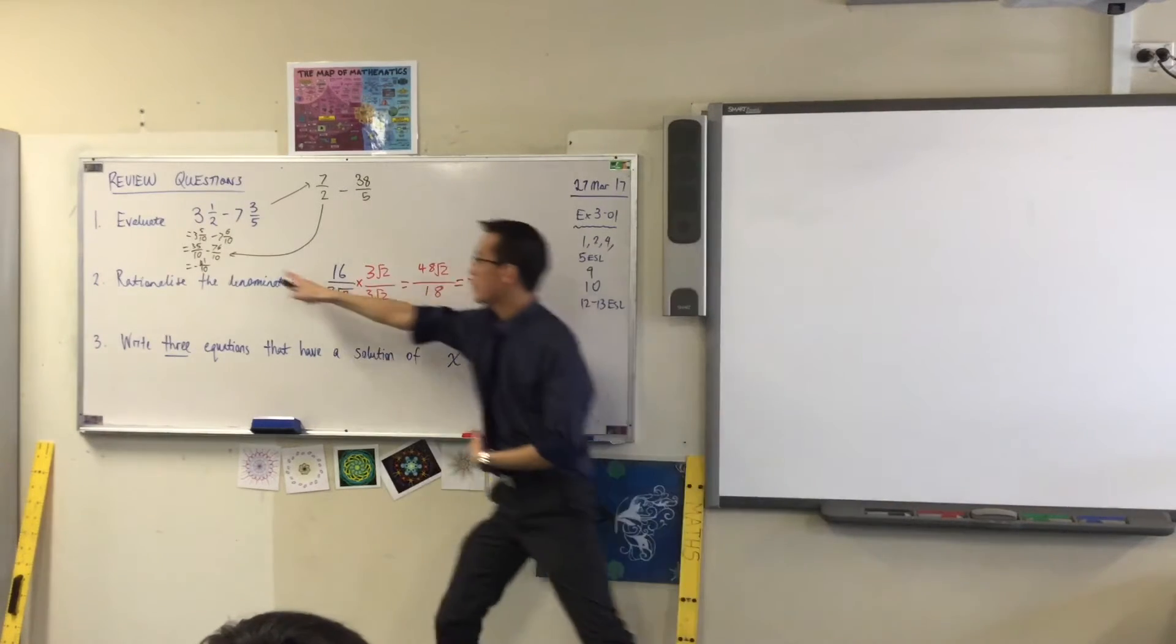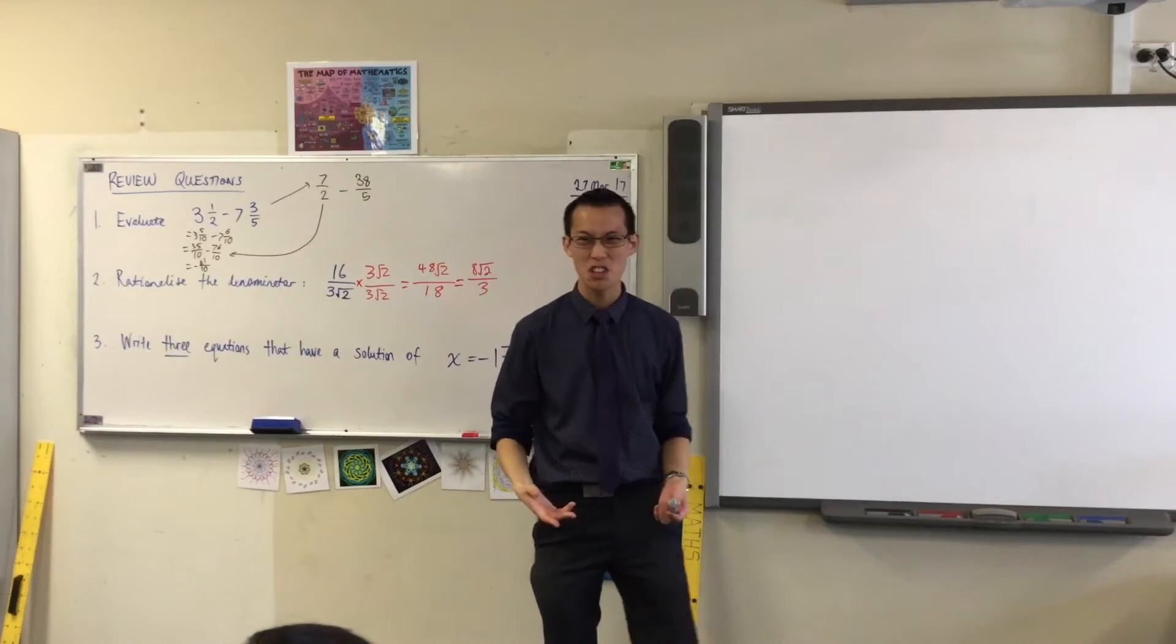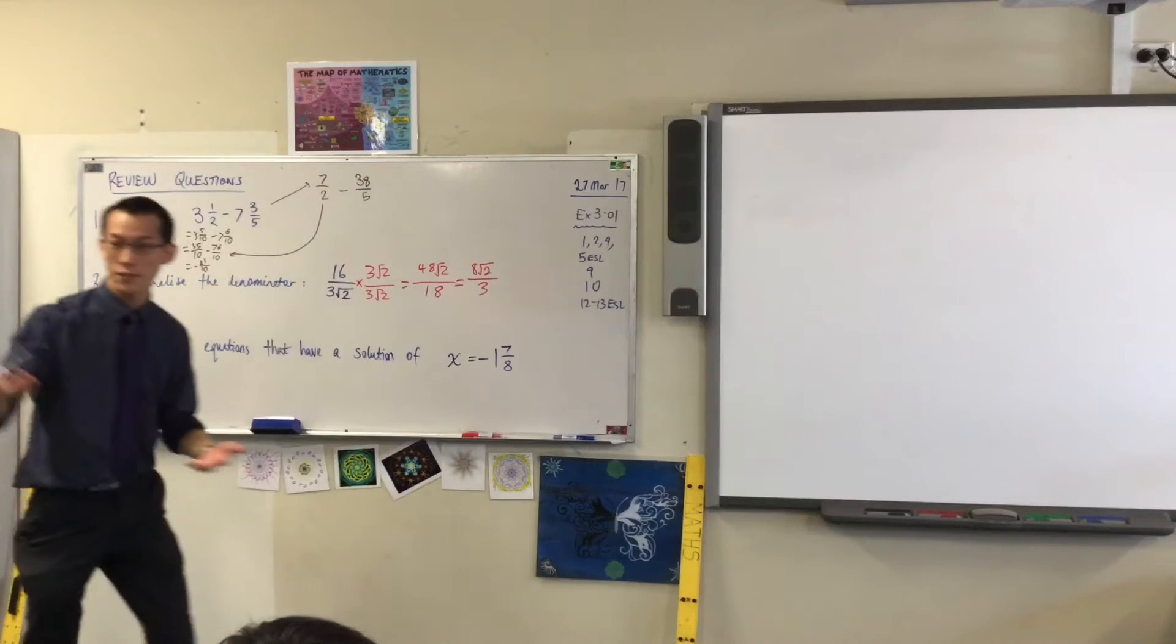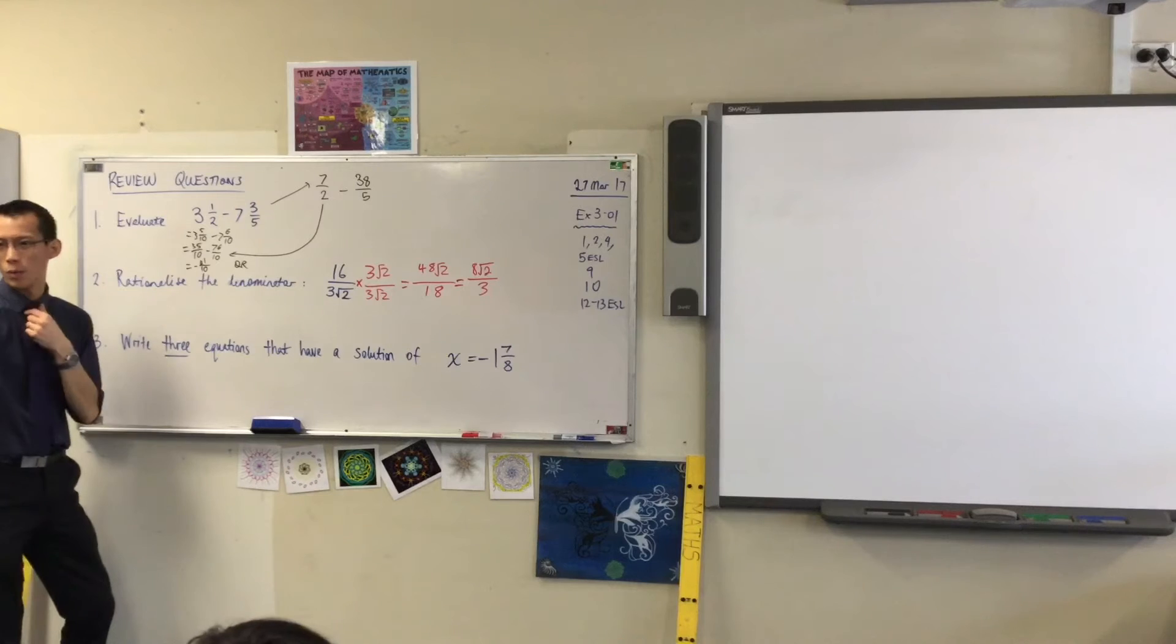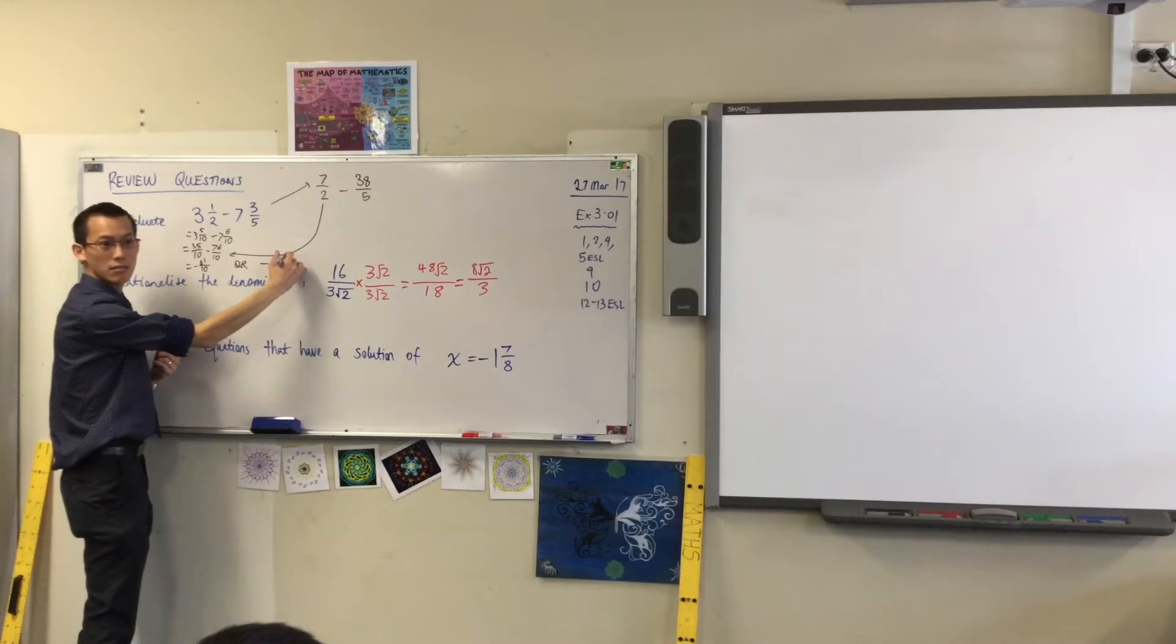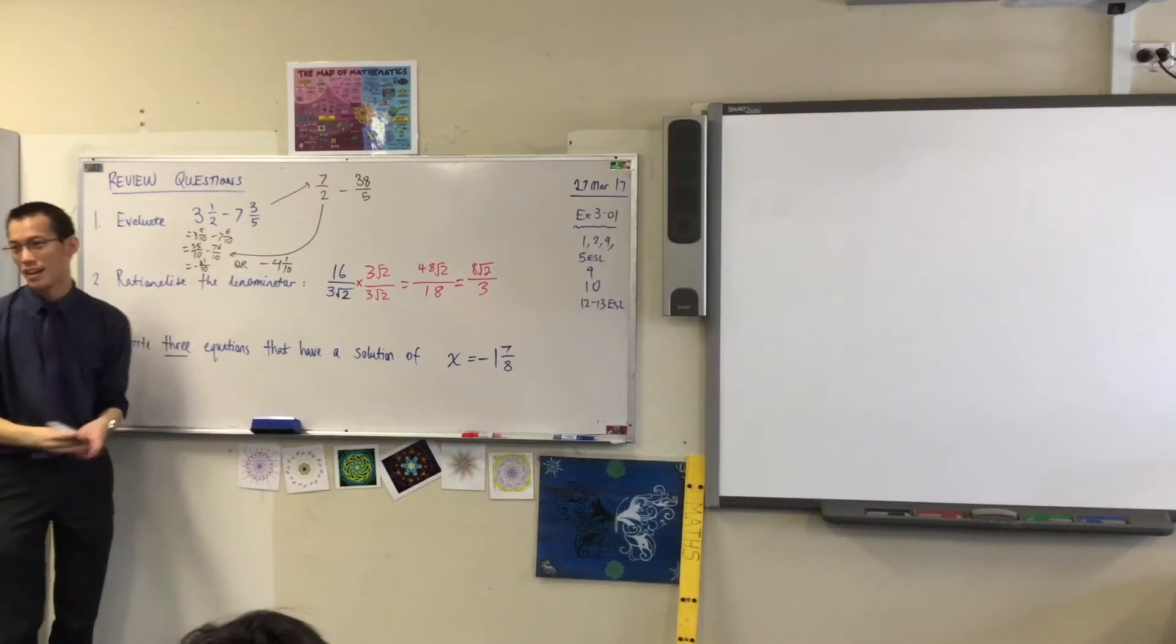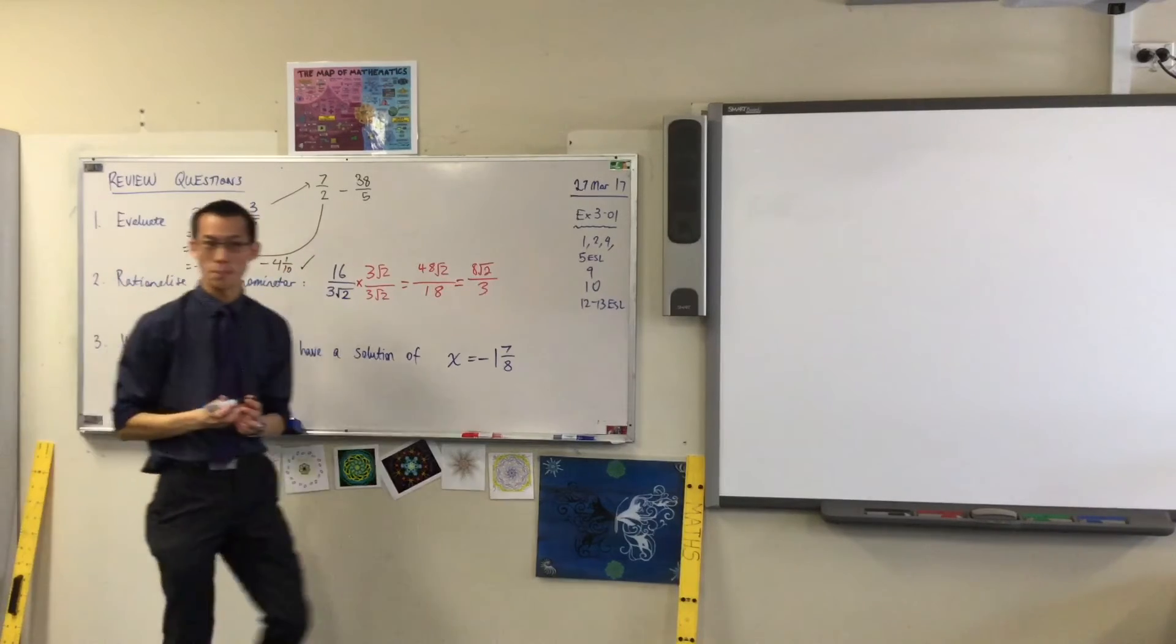Right. Finally, he's gone 35 take away 76 equals negative 41 on 10. What do you think? You're happy with that? Yeah. If you had converted it to a mixed number, right, I guess that would be minus, well, what was it? Minus 4? Negative 4 and 1 on 10. Either of which are fine. The question did not ask you to put it in one form or another. So either of those should get a VT. Good job.